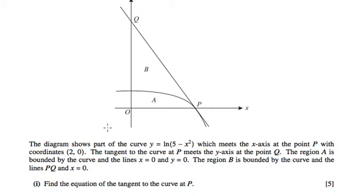Question 8, part 1 has given us a load of information. We've been told that this is the curve y equals ln of 5 minus x squared. And we're told that P, this line here is a tangent to the curve. We're also told that P's coordinate is 2, 0.